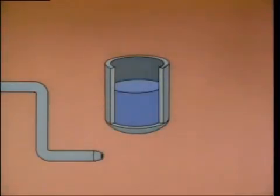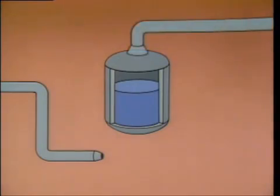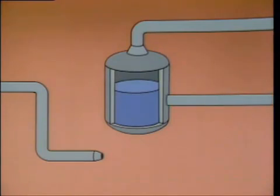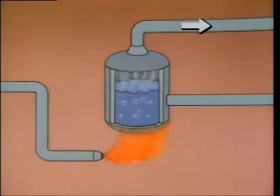First, we'll cover the shell to prevent the steam from escaping. Then we'll add a steam outlet line to collect the steam and route it to where it can be used. We also need a way to supply water to the shell so it won't boil dry, so we'll add a feed water line. It will provide a continuous supply of water to replace the water that's changed to steam. Now we have a boiler that can heat water, produce steam, and route it out of the shell to where it's required.